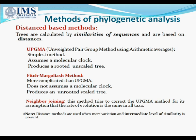UPGMA is the simplest method; it assumes a molecular clock and produces a rooted, unscaled tree. The Fitch-Margoliash method is slightly more complicated than UPGMA — it does not assume a molecular clock and produces an unrooted scaled tree. The neighbor joining method tries to correct the UPGMA method for its assumption that the rate of evolution is the same in all taxa.